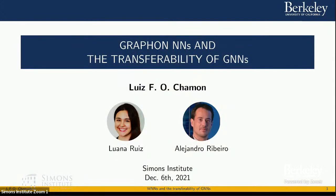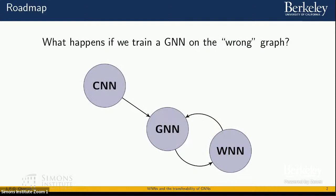Thank you very much. Before I begin, let me acknowledge that the work I'm going to present is led by one of us at Penn, together with my former PhD advisor Alejandro Ribeiro. Let me jump right in with the main question I want to tackle today: what happens if we train a graph neural network on the wrong graph?